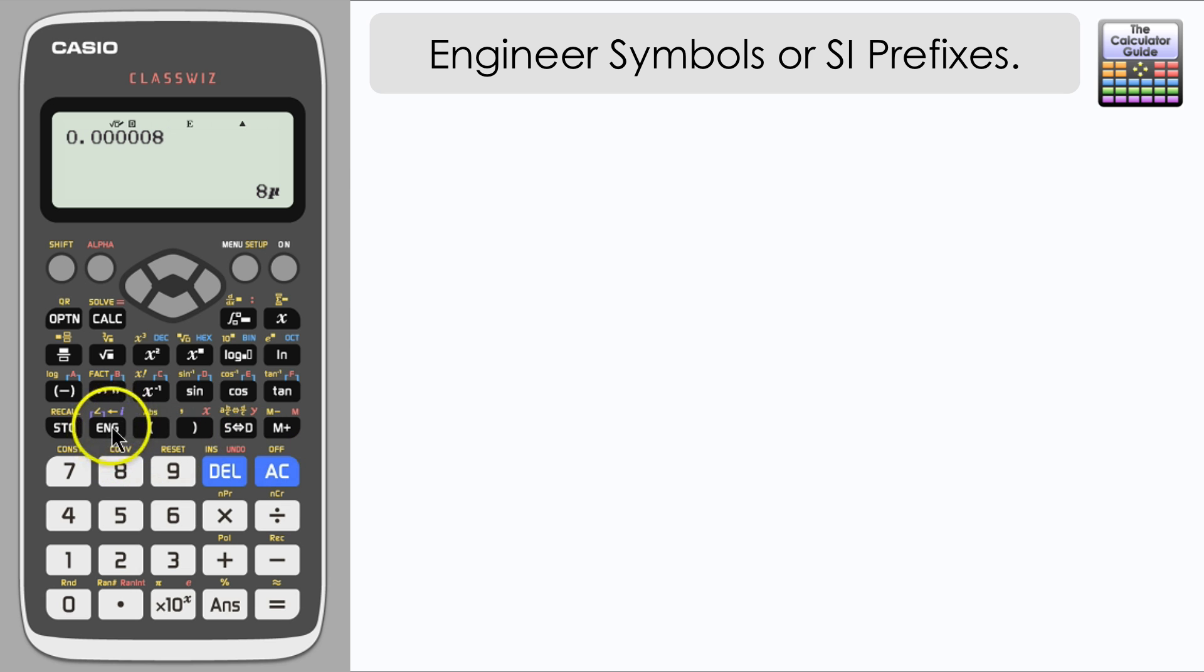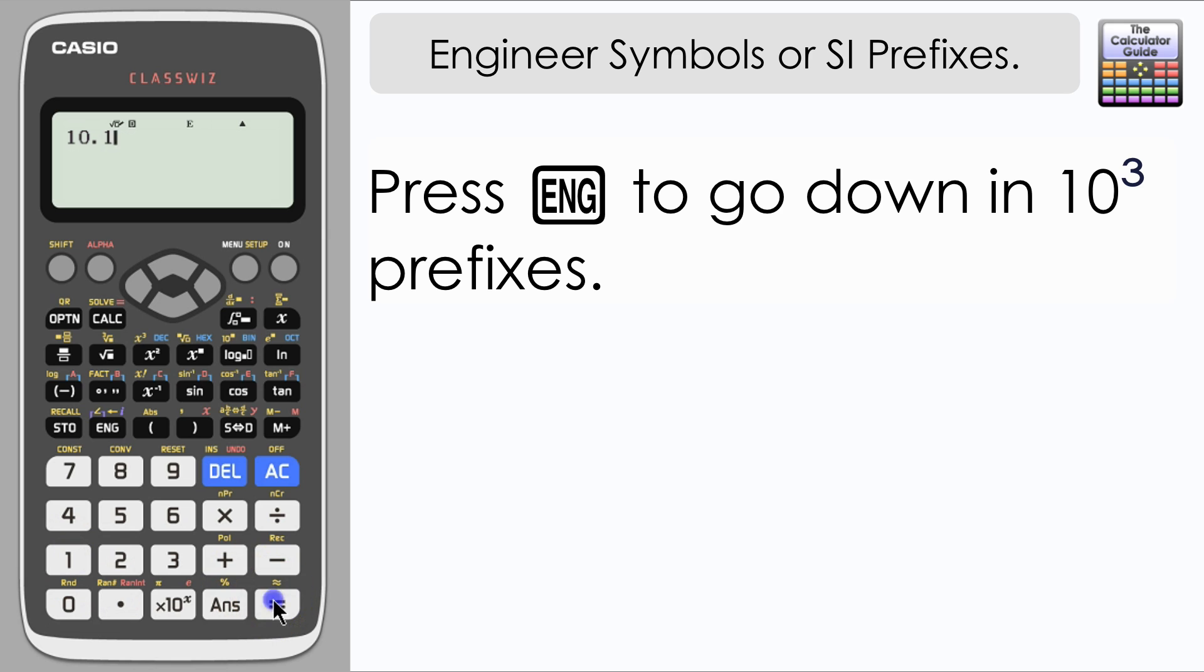The ClassWiz does enable you to convert between different SI prefixes by using the engineering button or ENG. So let's input the value of 10.1, which could be 10.1 watts for example, and by repeatedly pressing the button we can switch between the different SI prefixes.